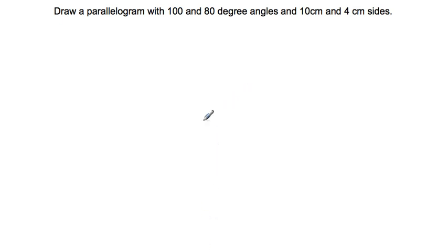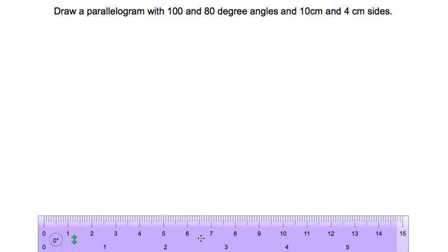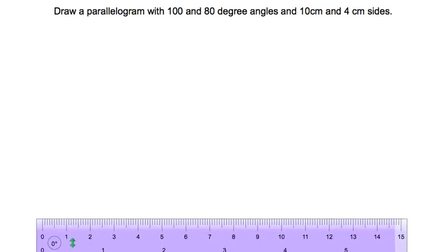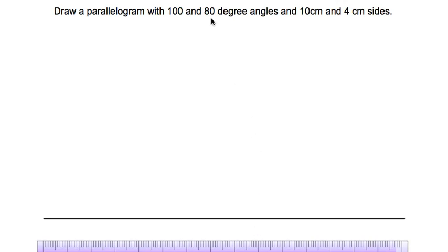The first thing we're always going to do when we're drawing a parallelogram is to draw a nice long line across the bottom, call that a baseline. And then the second thing we're going to do off of that line is we're going to measure 100 degree or 80 degree angles, but first we have to measure one of the two measurements for the sides.